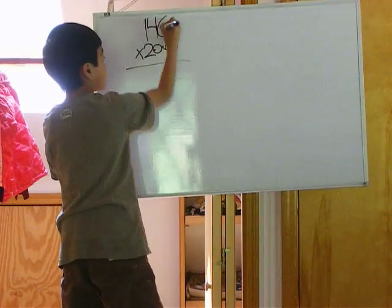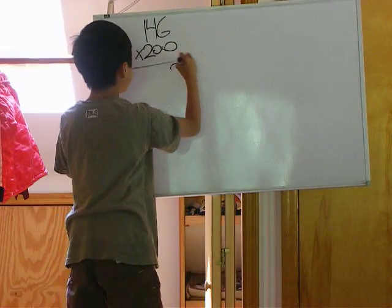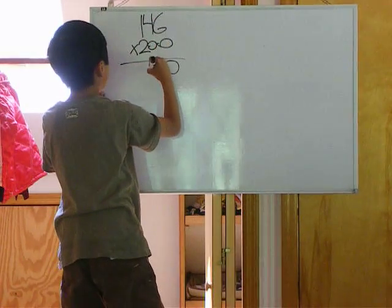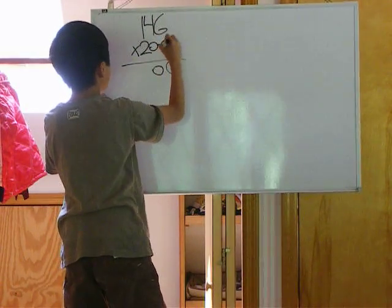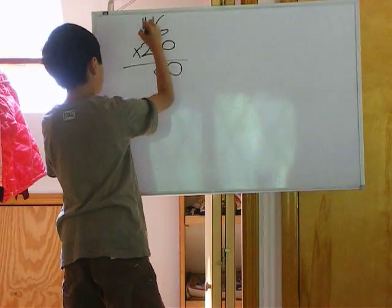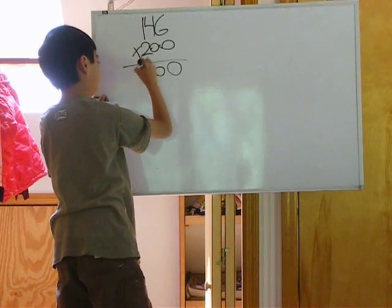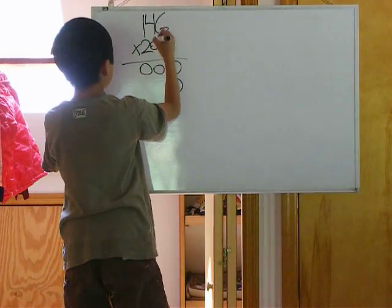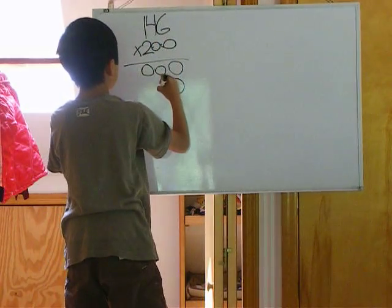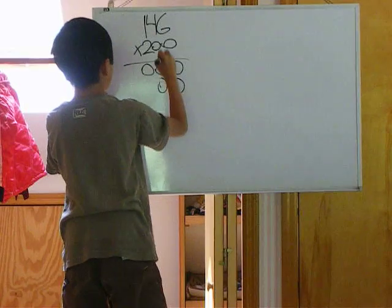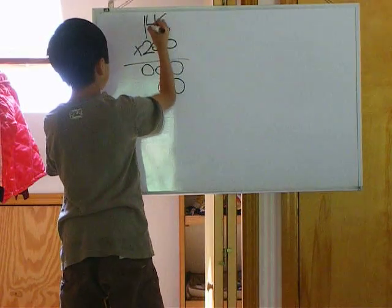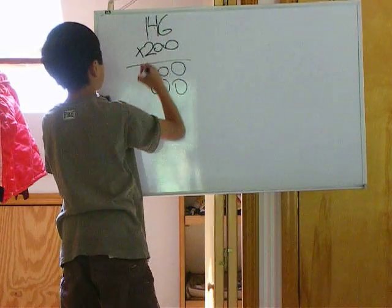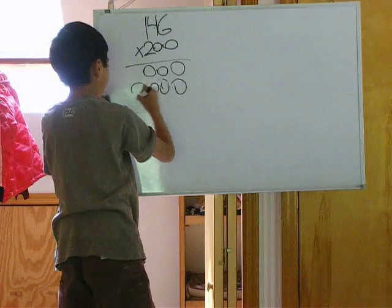0 times 6, 0. 0 times 4, 0. 0 times 1, 0. Bring this arrow down. 0 times 6, 0. 0 times 4, 0. 0 times 1, 0.